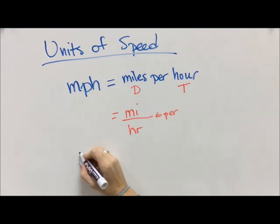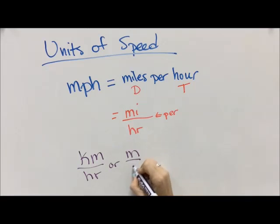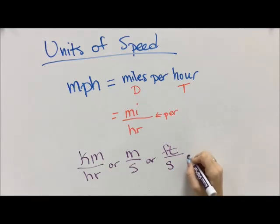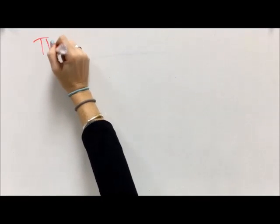There's lots of different types of units, though. For another country, we might have kilometers per hour, meters per second, feet per second. We could also have centimeters per second, which we'll see when we do some labs here in science class. So units of speed help us understand that we need a distance, and we need to divide it by a time.